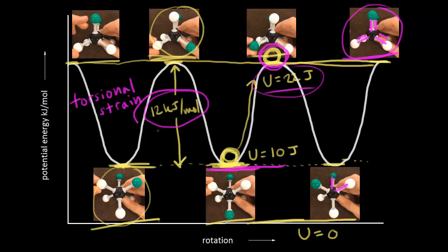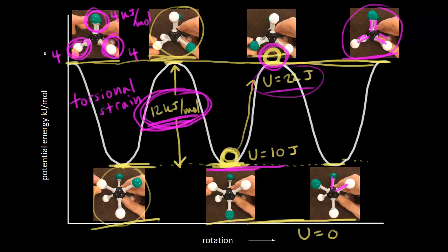The total energy cost between the two conformations is 12 kilojoules per mole, and we have three pairs of eclipsed hydrogens. Here's one pair of eclipsed hydrogens, here's another pair, and here's another pair. So if the total energy is 12 kilojoules per mole and I have three pairs of eclipsed hydrogens, we can say that the energy cost for each pair of eclipsed hydrogens is 4 kilojoules per mole — four for each pair, adding up to a total of 12. We can think of two hydrogens eclipsing each other as having an energy cost of 4 kilojoules per mole.